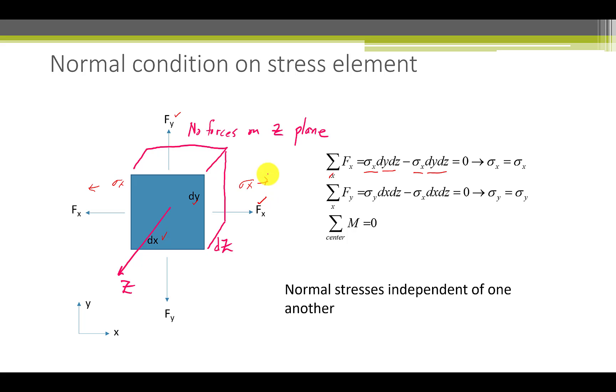Just a quick word about sign convention. The stresses are tensile, so they're positive, but the force is positive here and negative here. The same thing can be done for the y component. And for moments, we realize that these forces are passing through the middle, so that the sum of the moments is zero, since the moment arm is zero. What this means is that normal stresses are independent of one another.